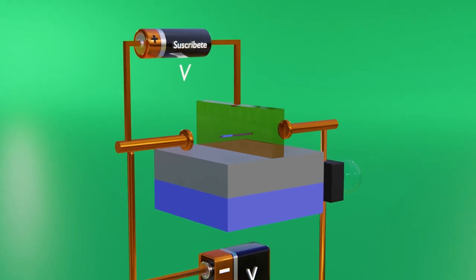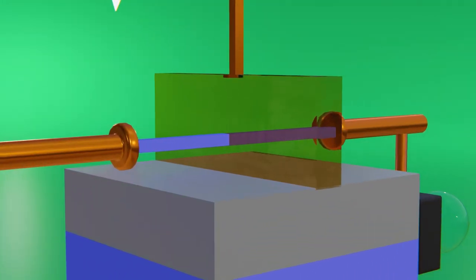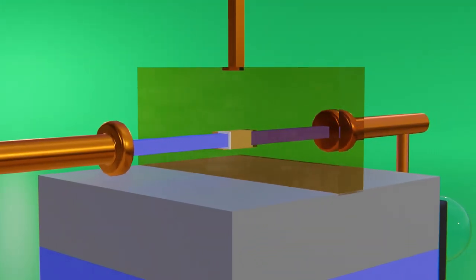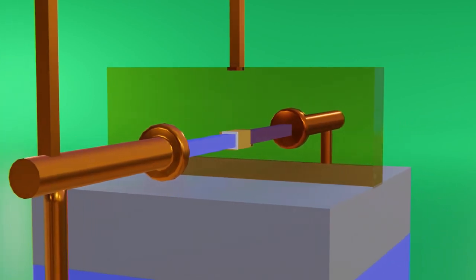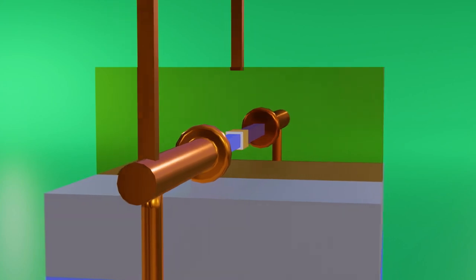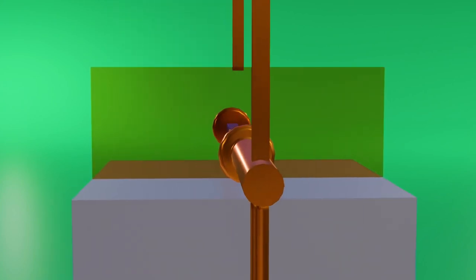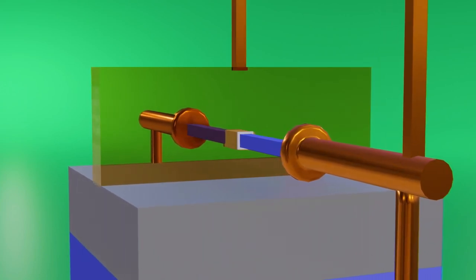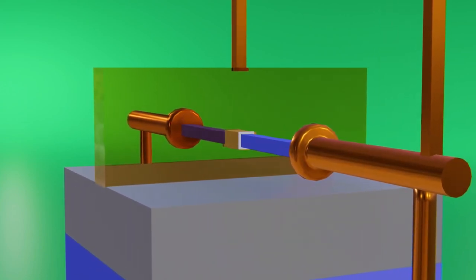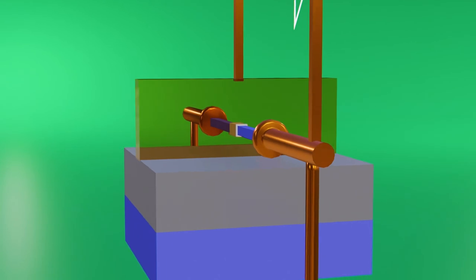In fact, other options are already being developed, such as the GAAFET or gate all-around field effects transistor that basically takes an extra step and instead of controlling three sides of the channel through the gate, it controls all sides, generating nanowires that allow us to better control the flow of current, but unfortunately at some point we will find ourselves with the same problem.